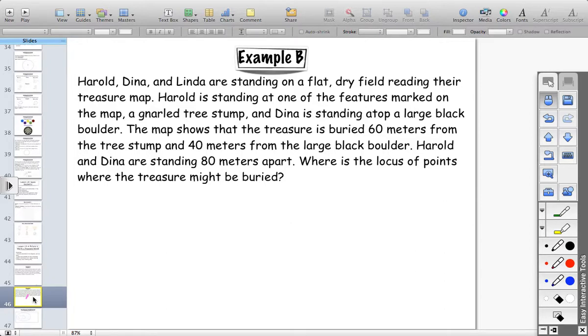Okay, so Harold and Dina, let's read the problem. Harold, Dina, and Linda are standing on a flat, dry field reading their treasure map. Harold is standing at one of the features marked on the map, a gnarled tree stump. And Dina is standing atop a large black boulder. The map shows that the treasure is buried 60 meters from the tree stump and 40 meters from the large black boulder. Harold and Dina are standing 80 meters apart. Where is the locus of points where the treasure might be buried?